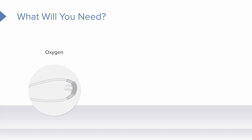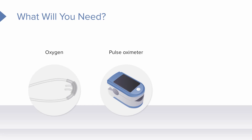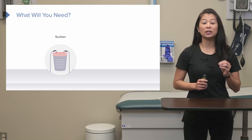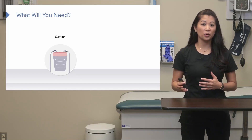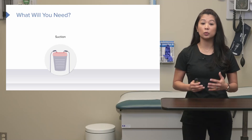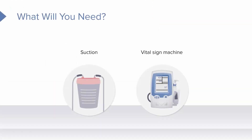To protect our patients, we need oxygen to help support their oxygen status. A pulse oximeter allows us to get an exact read on the patient's oxygen level. We also want to have an IV catheter set up and supplies handy, because we may need to administer anti-seizure medications. Suction is really important because aspiration is a high risk during seizures. And don't forget our vital sign machine to monitor hemodynamic status, especially after a seizure.